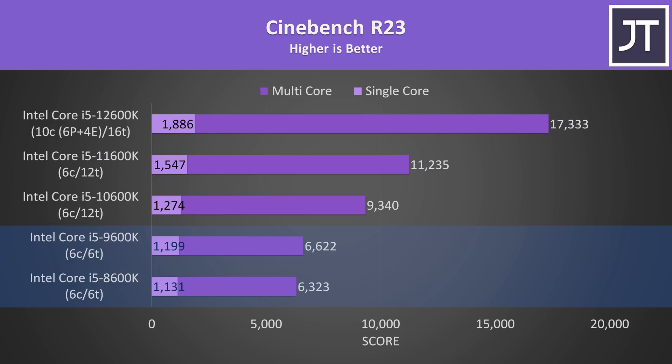The multicore difference between 8th and 9th gen was basically nothing, while the difference going from 11th to 12th gen was a massive 54%, and this is due to the addition of the e-cores.